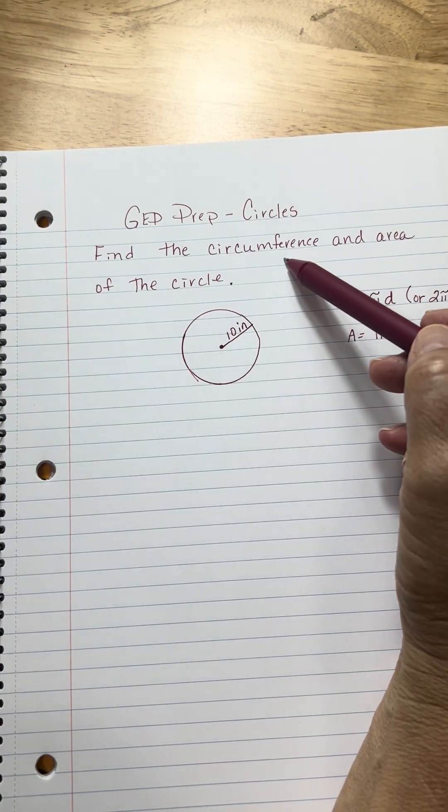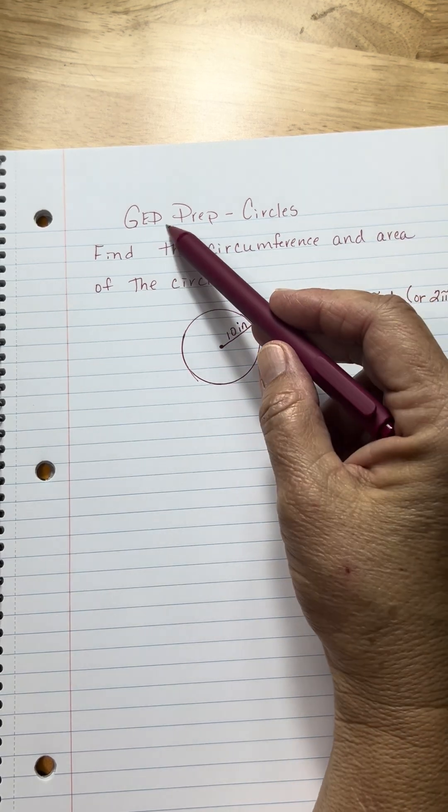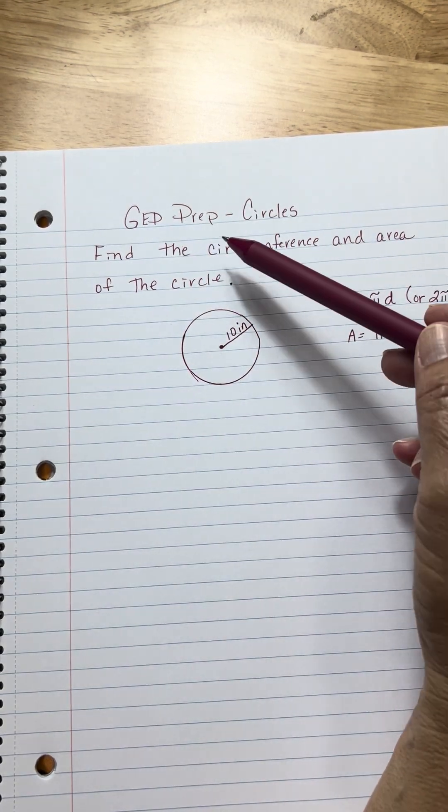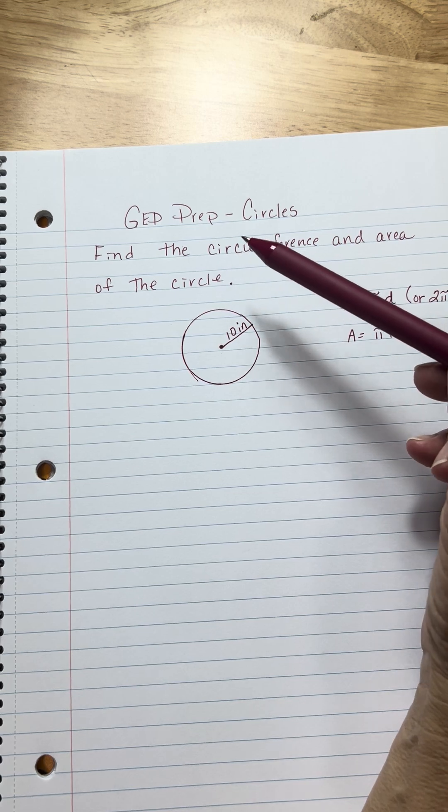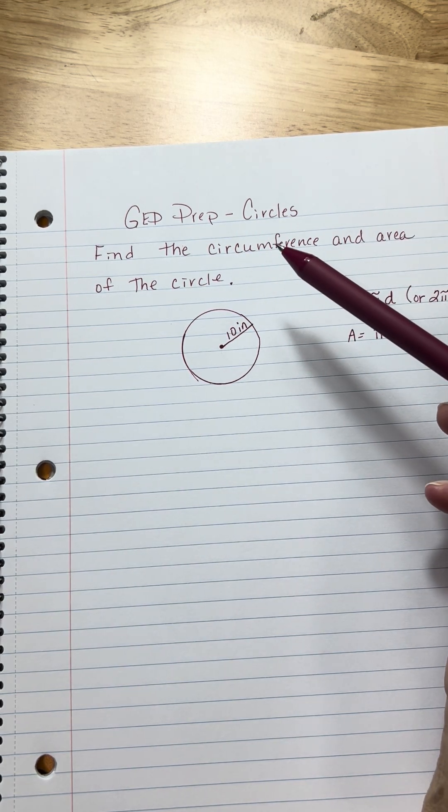So let's review finding the circumference and the area of a circle. Now, when you go take your GED, and by the way, this is good for GED, ACT, HiSET, just about any kind of standardized test is going to have a circle on it.